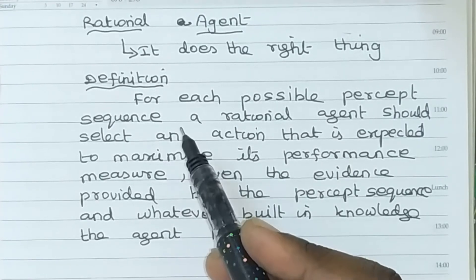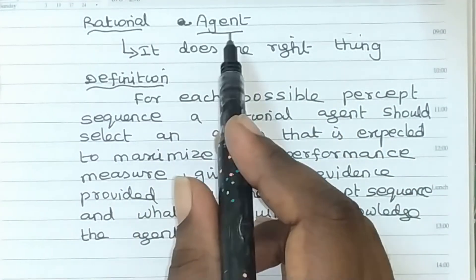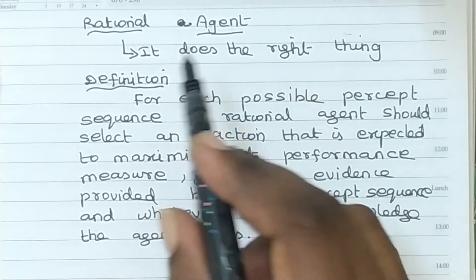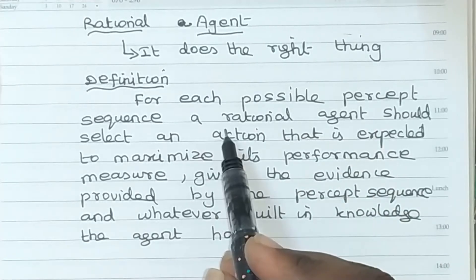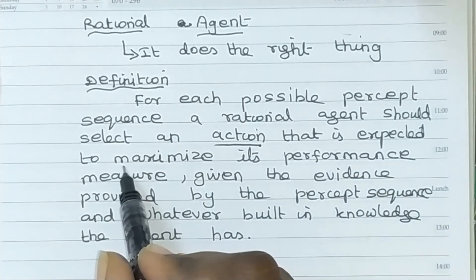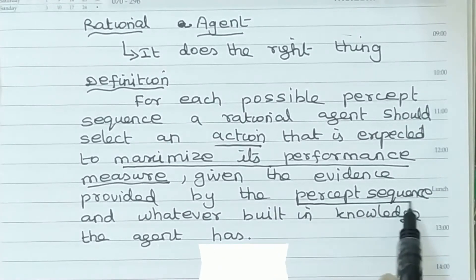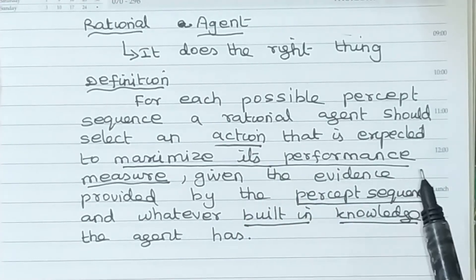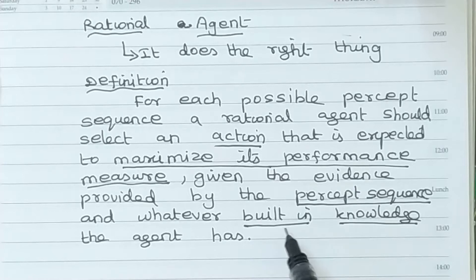In this tutorial we are going to learn about rational agent. A rational agent is one that does the right thing. For each possible percept sequence, a rational agent should select an action that is expected to maximize its performance measure, given the evidence provided by the percept sequence and whatever built-in knowledge the agent has. So a rational agent has four main parts: performance measure, percept sequence, and the agent's built-in knowledge.